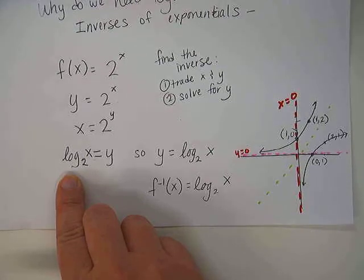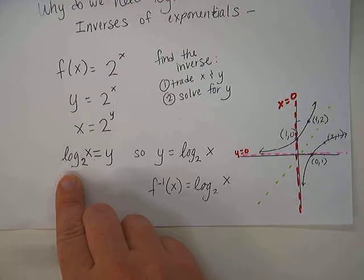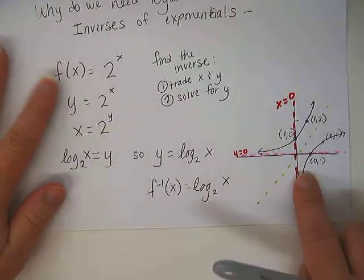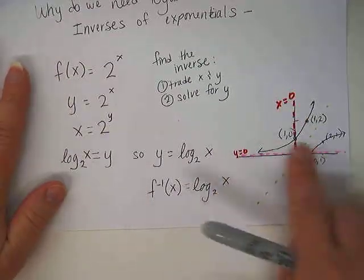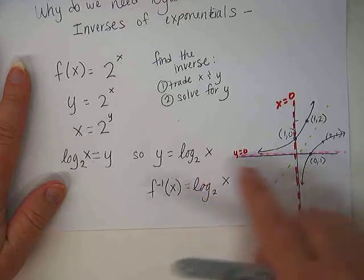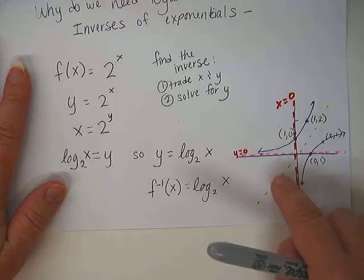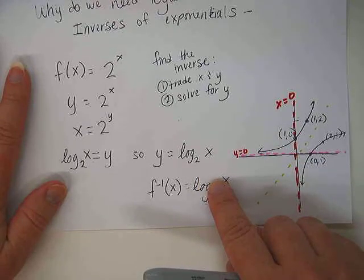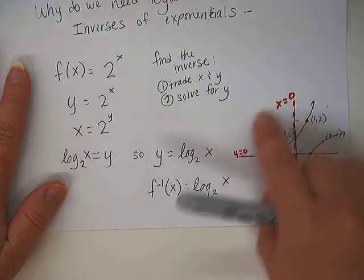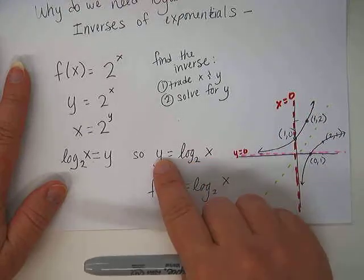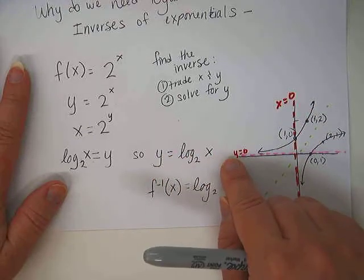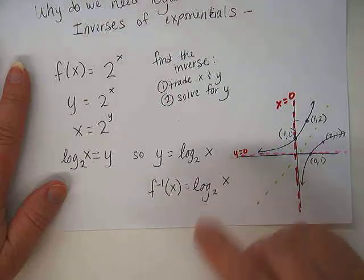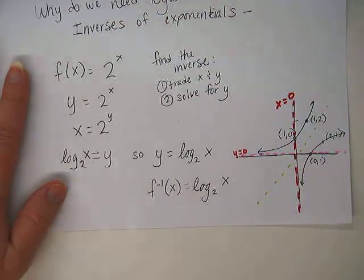Do you remember me saying the three things that we always have to pay close attention to when we're doing domain? Fractions, square roots, and logarithms. Fractions, the denominator cannot be 0. Square roots, the square root cannot be negative inside the square root. Logarithms, logarithms, what can logarithms not be? The x value cannot be 0, and it cannot be negative.